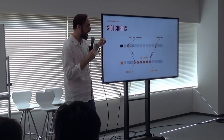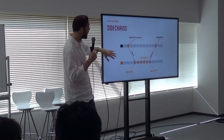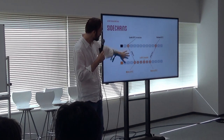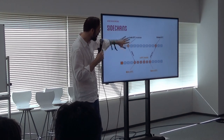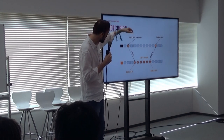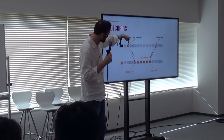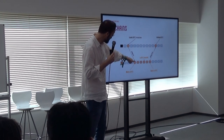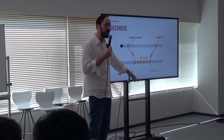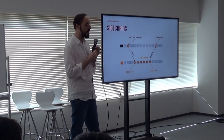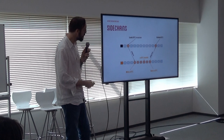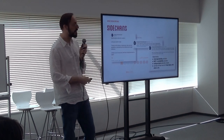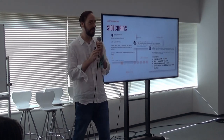A side chain is basically an atomic swap between two different chains — Ethereum, Bitcoin, or whatever — where you deposit one token and it's minted on the other side. But I'm not going to talk about this because side chains are not layer 2.